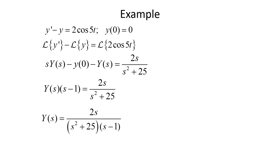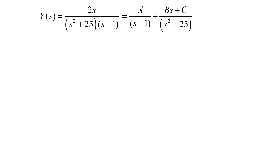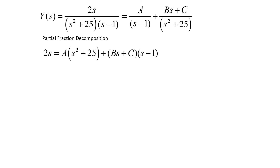Now that we have Y(s) by itself, we take the inverse Laplace transform to find the solution. We break this up using partial fractions: 2s over (s squared plus 25)(s minus 1) equals A over s minus 1 plus Bs plus C over s squared plus 25. Multiplying by the common denominator: 2s equals A(s squared plus 25) plus (Bs plus C)(s minus 1). Expanding: 2s equals As squared plus 25A plus Bs squared plus Cs minus Bs minus C.